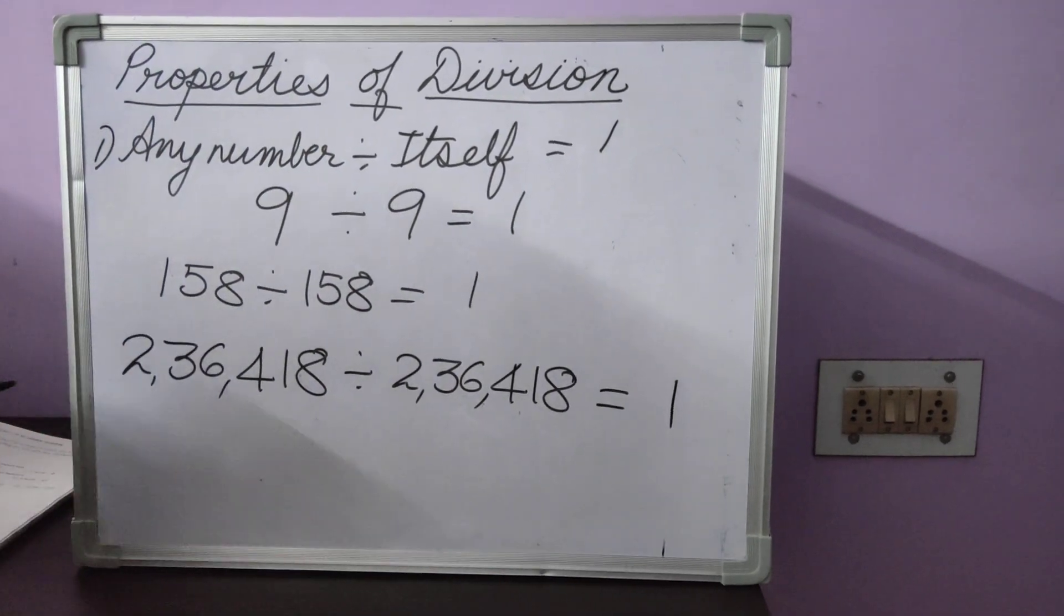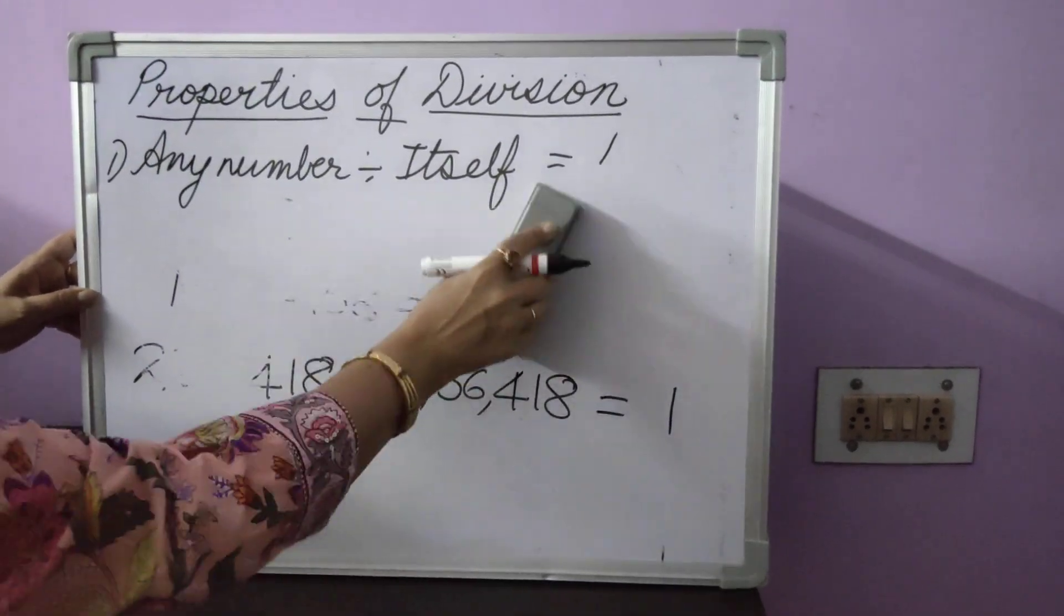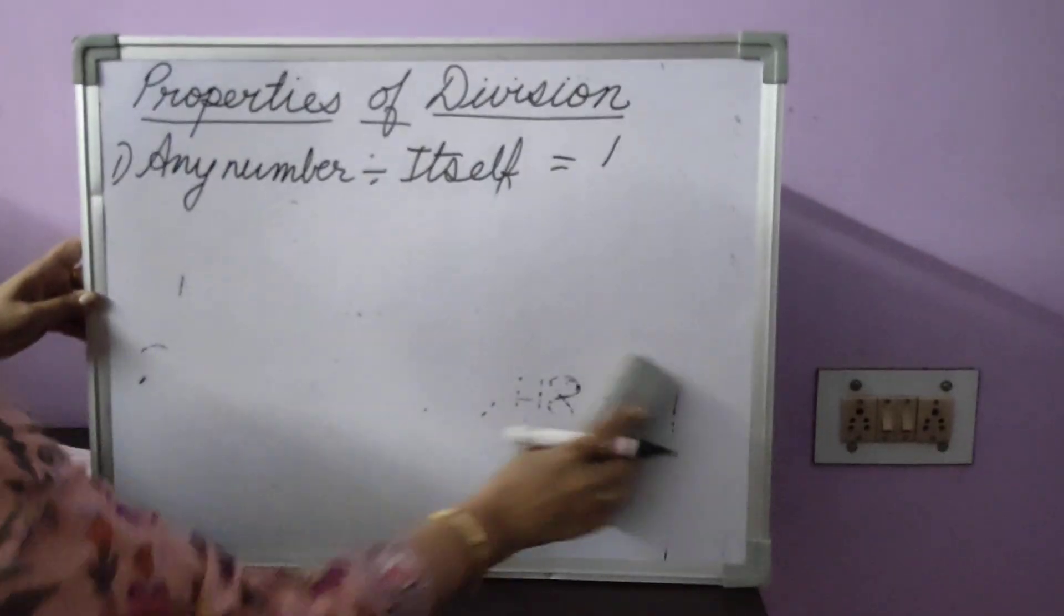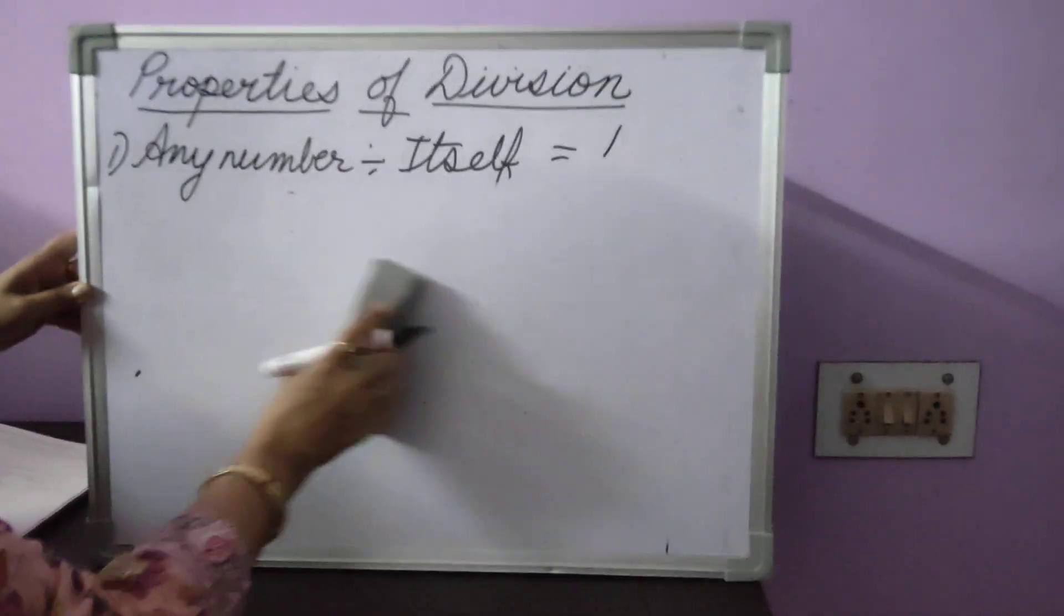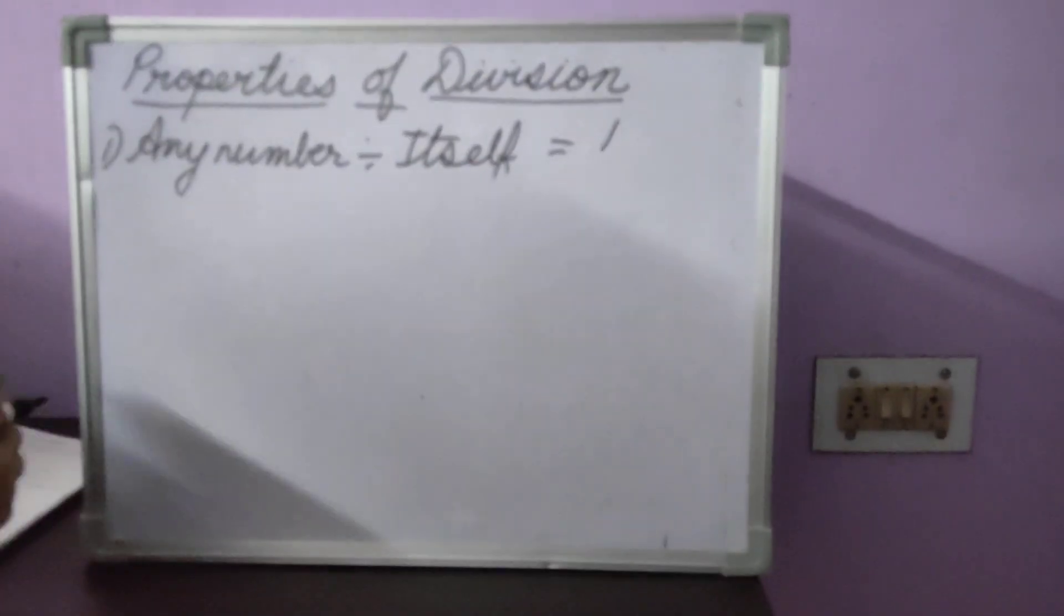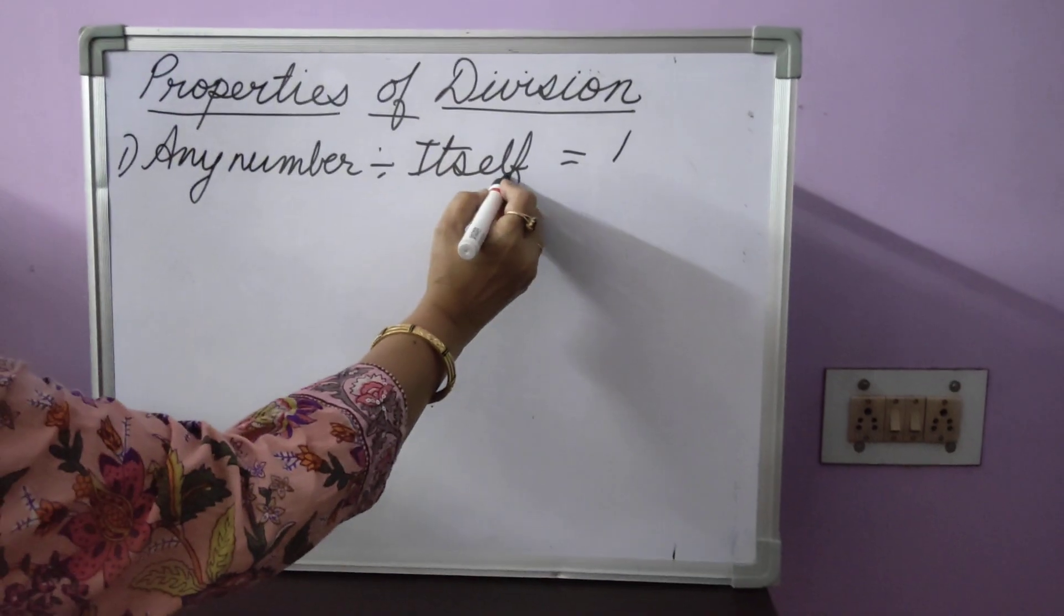This is a rule that any number, if it is divided by itself, will be equal to 1. Now, where do we use this property? We use this property in finding out missing numbers.